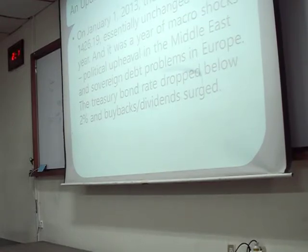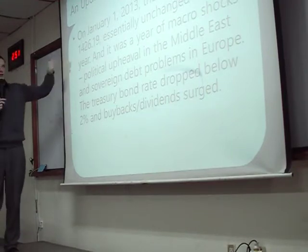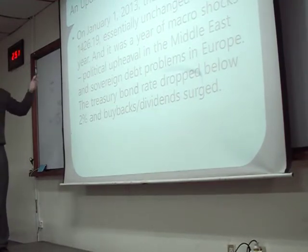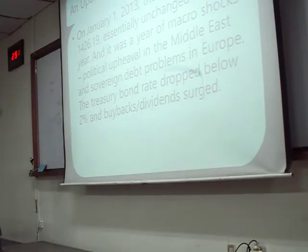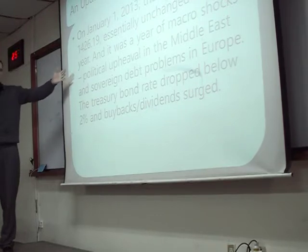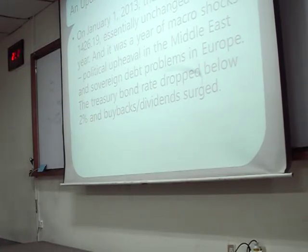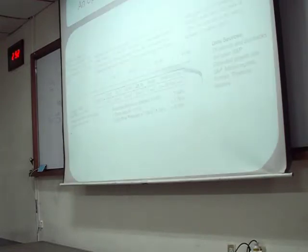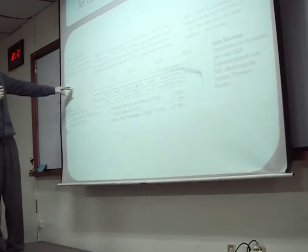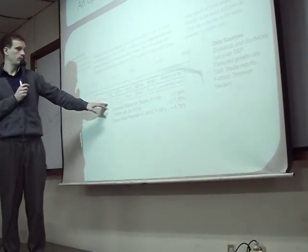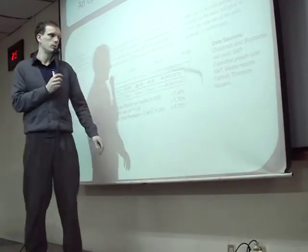In 2013, the S&P had gone up since 2009, so we need to update the implied premium. We also had some problems in 2013 — political problems in the Middle East, then problems in Europe. The treasury bond went down to 2%. The implied premium can change more so according to what's happening in the economy. If we do this calculation in 2013, we have the new present value, the future cash flows, and we find R. In this case, R was 5.78% — slightly lower.